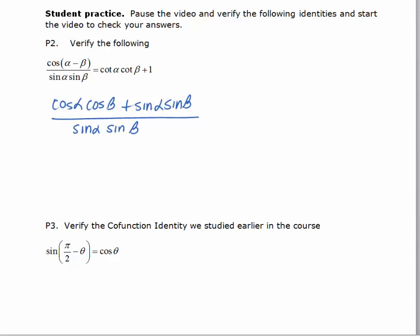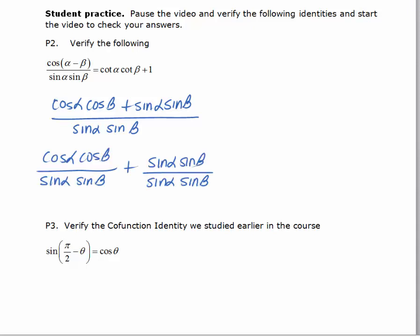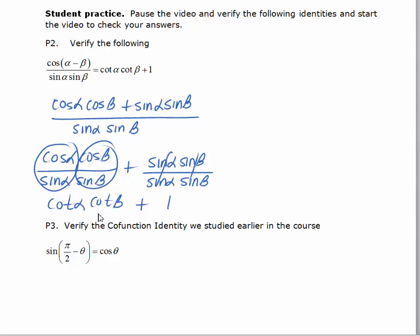Again, rewriting this as two separate terms: we get cosine alpha over sine alpha, which is cotangent alpha, and cosine beta over sine beta, which is cotangent beta. In the second fraction, both the sine alphas and sine betas cancel out, giving you one. So we have verified that identity.